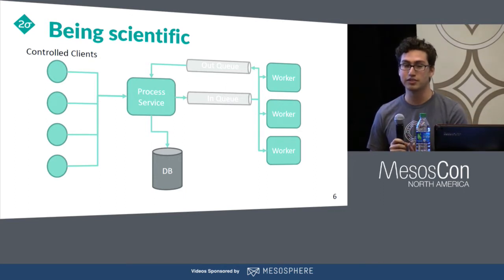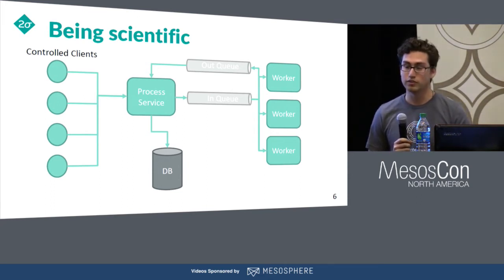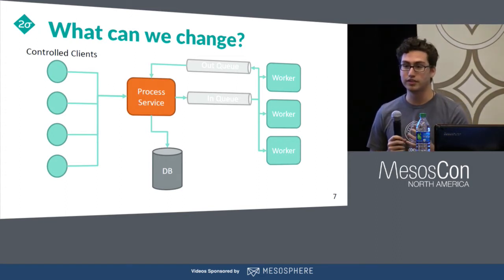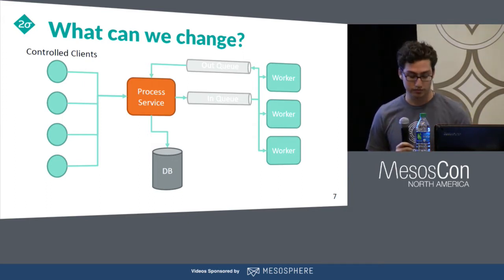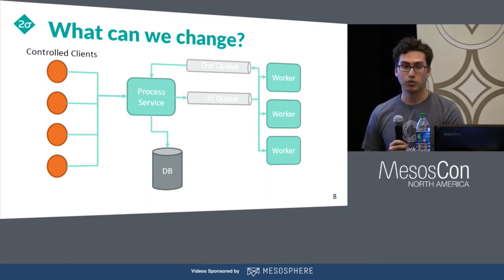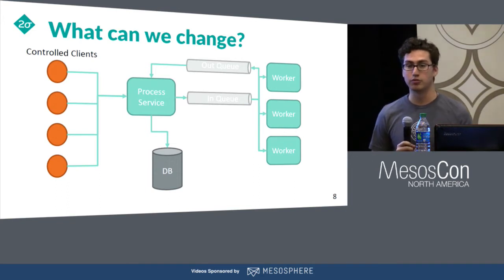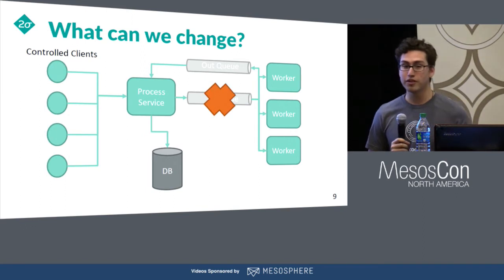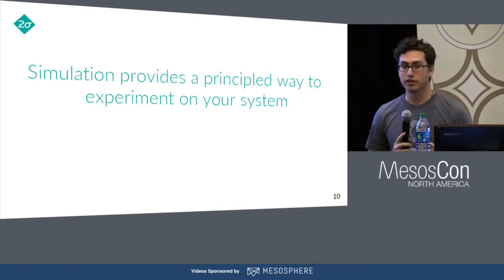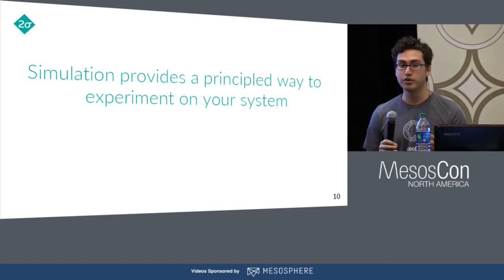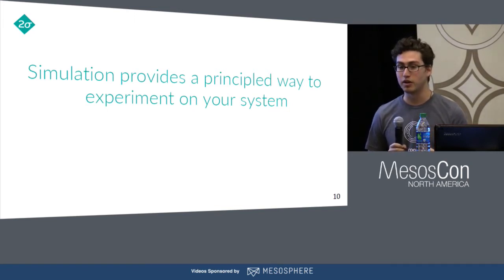What this means now is we can change any one piece and run a real experiment. I should say this still isn't fully controlled — servers can still fail, there can still be network partitions. But it's way better than what we have in production. We can change the lead service and start looking at what happens when we upgrade it. Hypotheses like: does it remain correct? Or what if we change our workload — what if we get twice as many requests as we normally do, or we switch from a read workload to a write workload? Or what if something fails? Now we can start to ask these questions and run these experiments in a scientific manner.